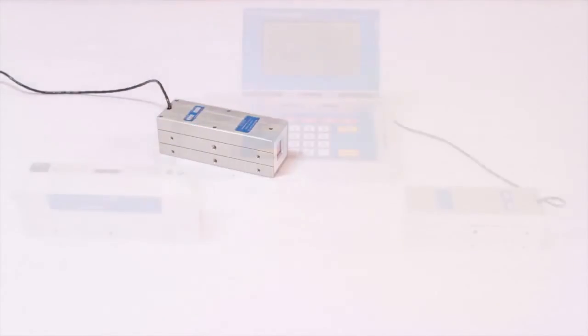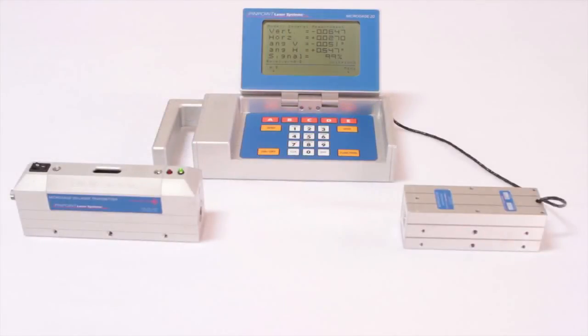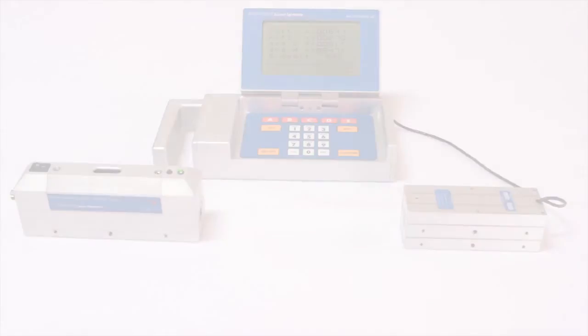The micro gauge 4D also measures the receiver's angular position, pitch and yaw, relative to the centerline of the laser beam, and the output is provided as precise measurements in degrees. This information is conveniently displayed on the micro gauge 2D display unit.